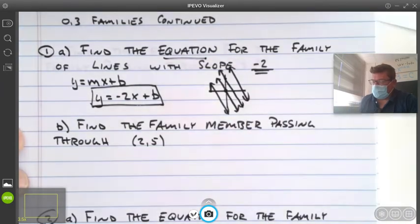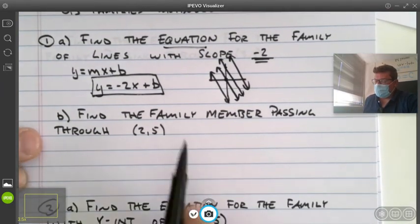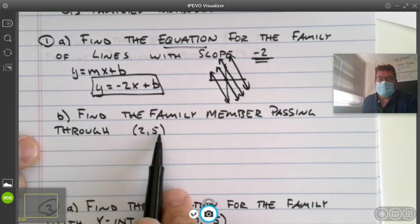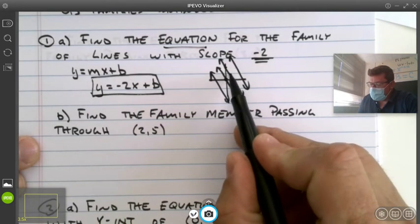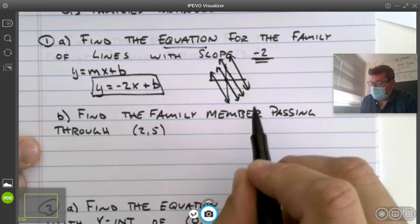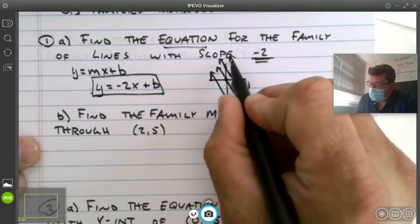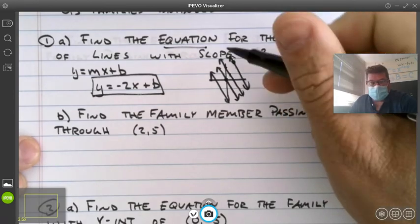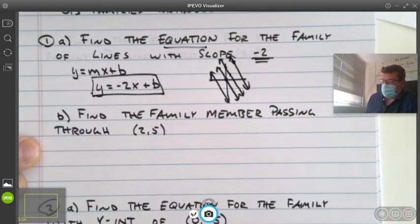The second part of problem one, find the specific family member that passes through the ordered pair two-five. So we want to find out which family member is it that passes through the ordered pair, go over two and up five. We might be looking for this guy right here.